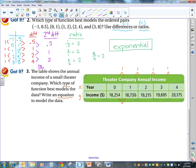18,730 minus 18,254 gives me a difference of 476. Now if I subtract these two numbers, 19,215 minus 18,730 gives me a difference of 485. Subtract those two, I'm going to get 480. And subtract those, and I'm going to get 480.